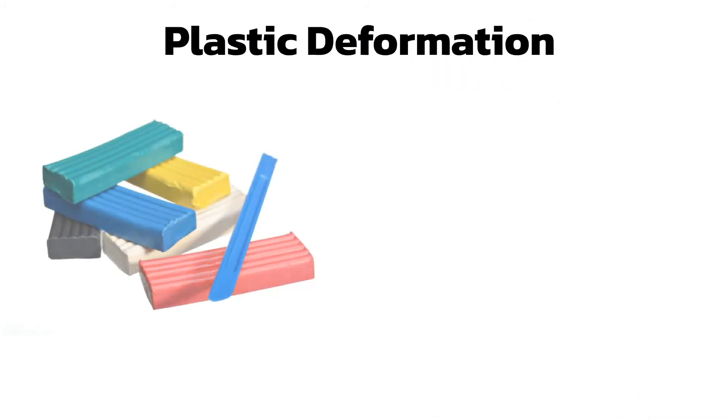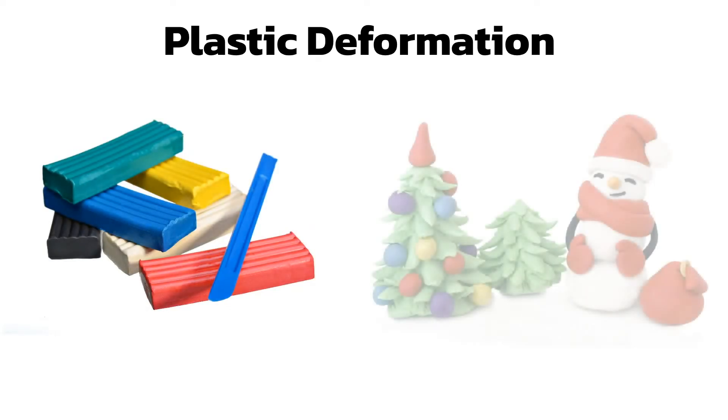Some materials, like plasticine, don't act in the same way. When you apply forces to a block of plasticine to shape it into a model, like this Christmas scene, it keeps its shape.